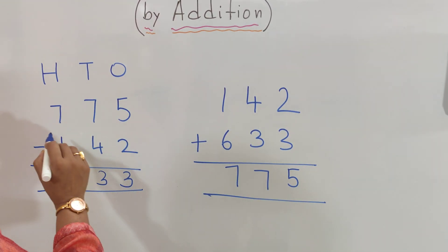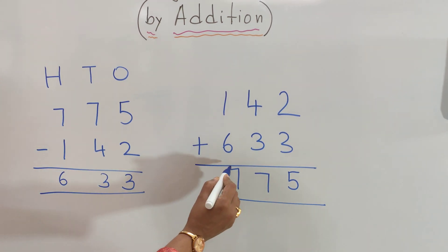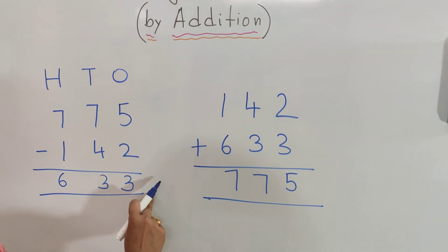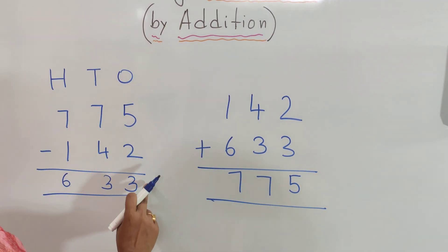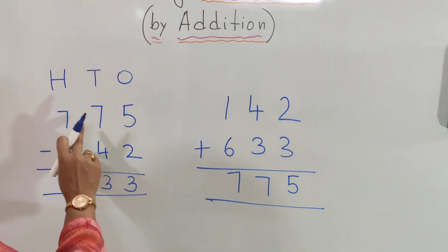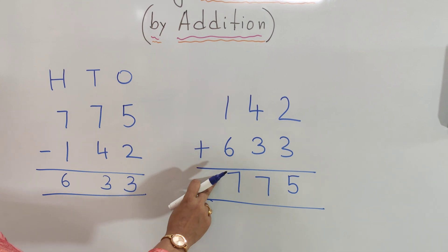So see, 775. So our subtraction is correct. The subtraction is correct because we get the bigger number, which is also known as minuend.